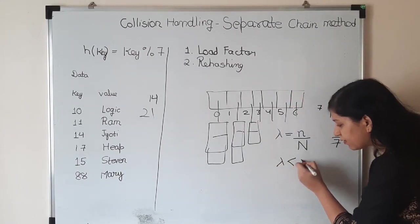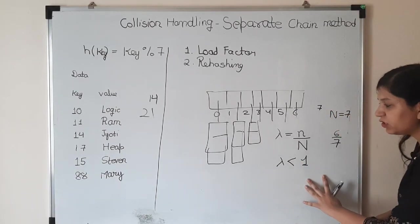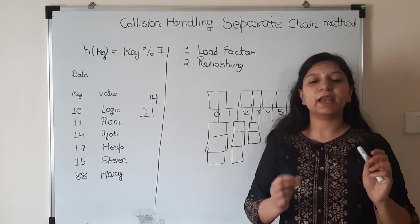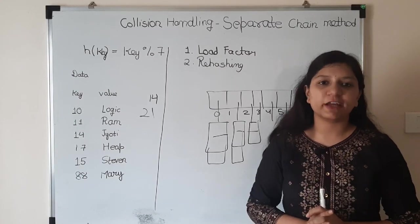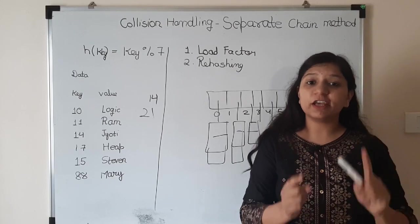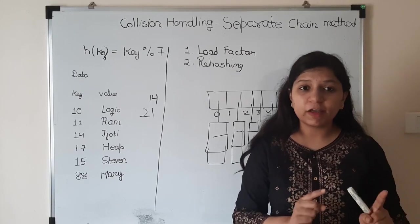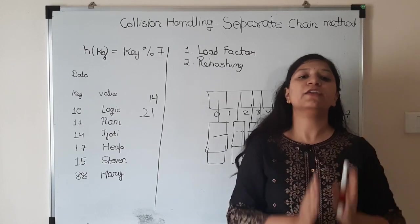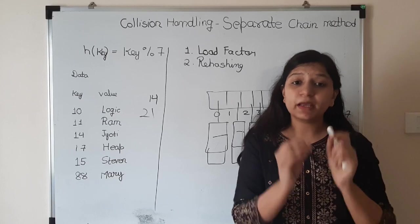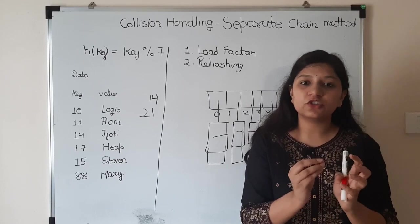In general we follow the rule that lambda should be less than one. In fact, the implementation we will do will keep lambda as 0.5. This is the lambda or load factor which gives you the ratio between input size and capacity. We try to make it less than one because we want to perform search in constant time, which is O(1).